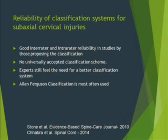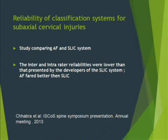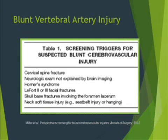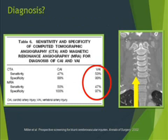The SLICK classification, proposed by Vaccaro et al., uses criteria of morphology, disco-ligamentous complex, and neurological status to classify lower cervical spine fractures. Its inter-rater and intra-rater reliability has been shown to be good in studies by its developers. However, various other studies have shown no universally accepted classification scheme, and experts still feel the need for a better system. The Allen-Ferguson classification is most often used, as depicted by a study done in 2014. A comparative study using an international array of spine surgeons found intra-rater reliabilities lower than those presented by the SLICK developers, and Allen-Ferguson fared much better than SLICK.